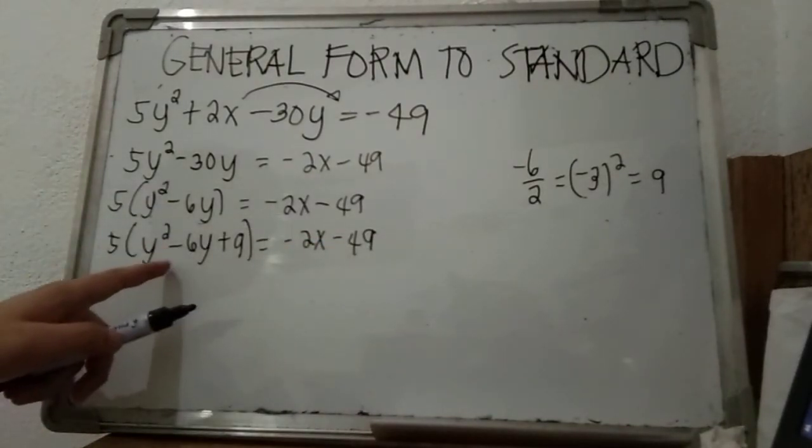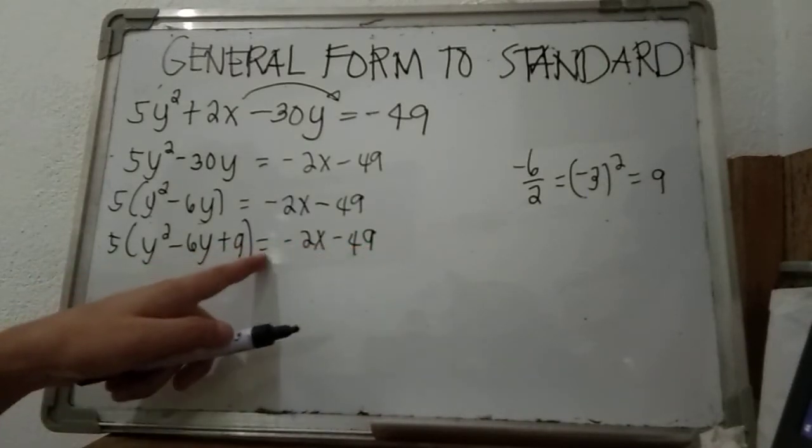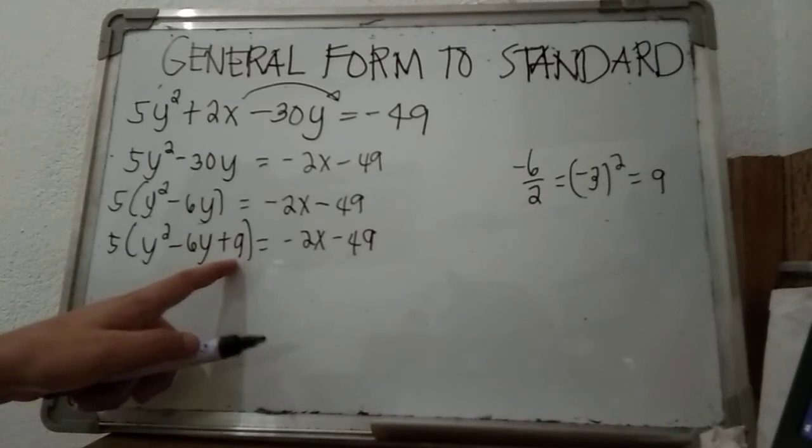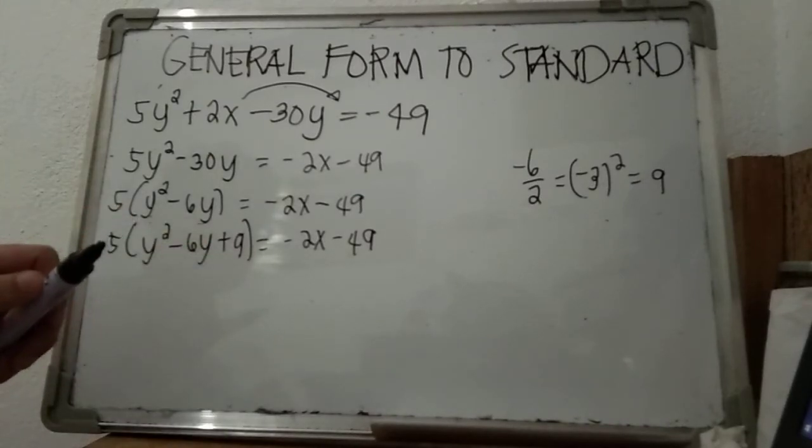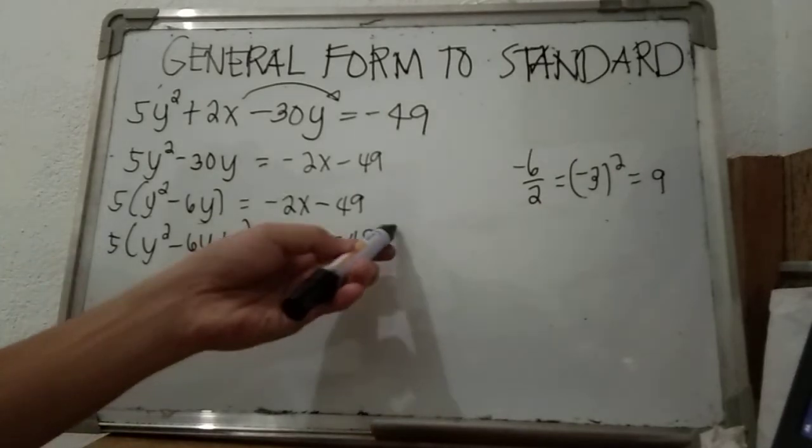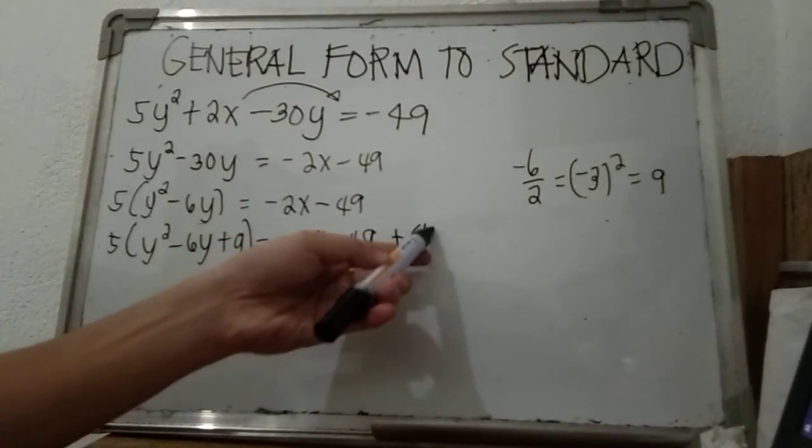If you add something on the left, please add also on the right side to maintain the balance. You added 9, but there is still 5, so what is 5 times 9? That's 45. So add 45 on the right side.